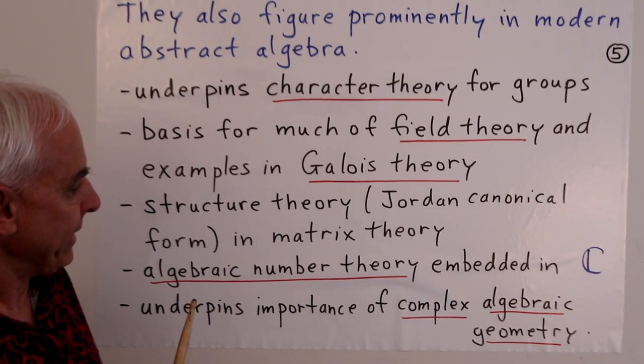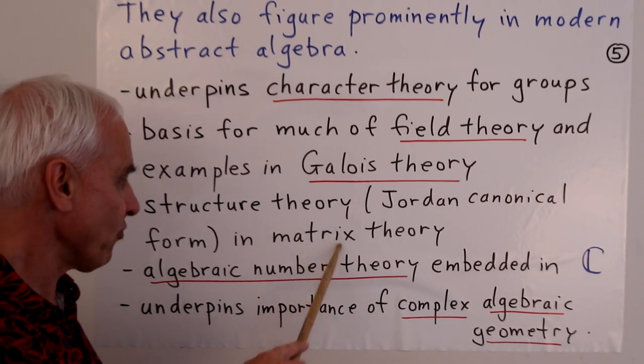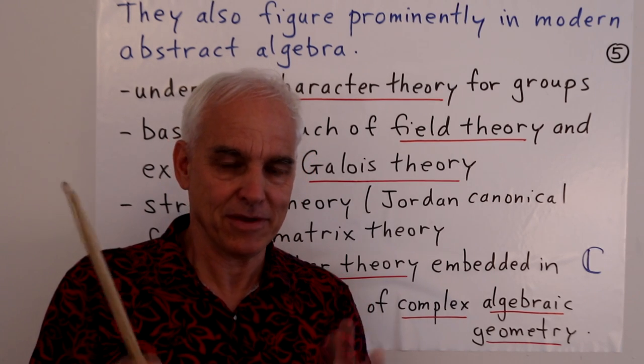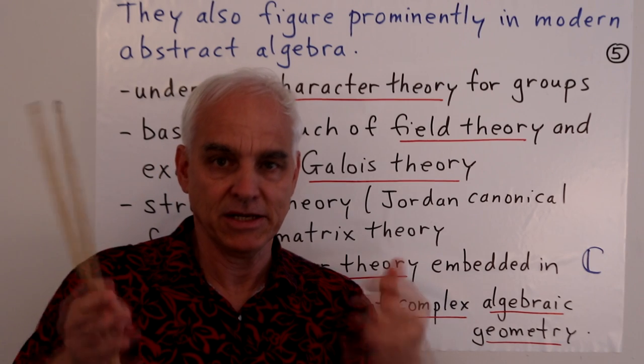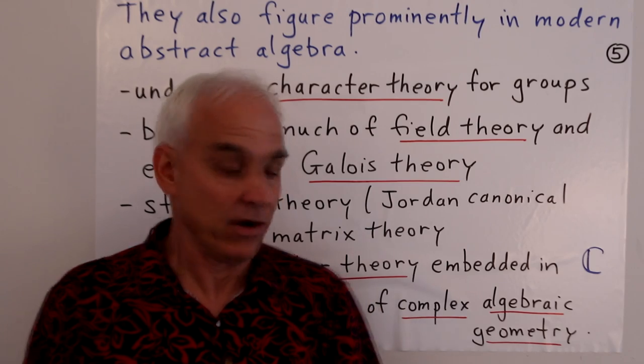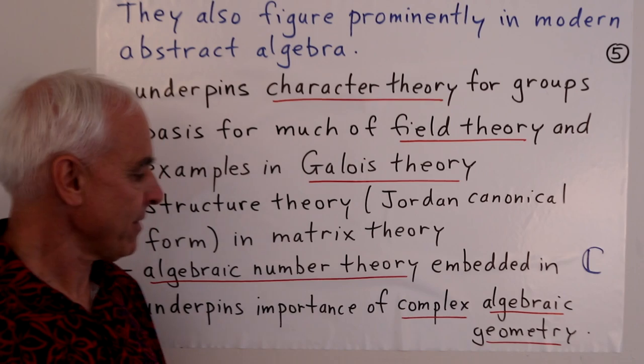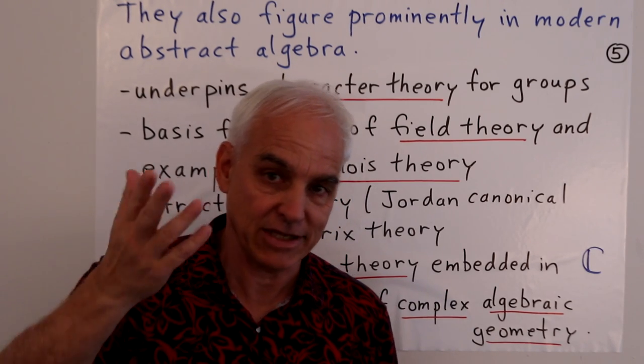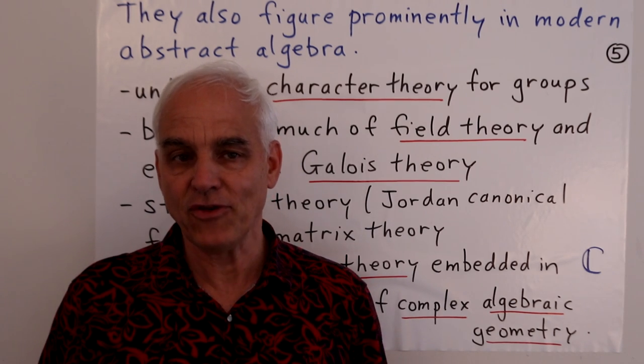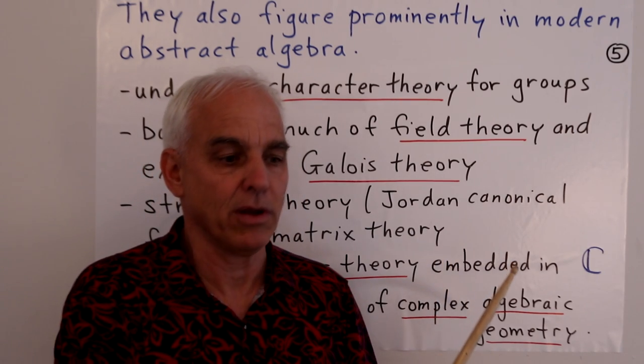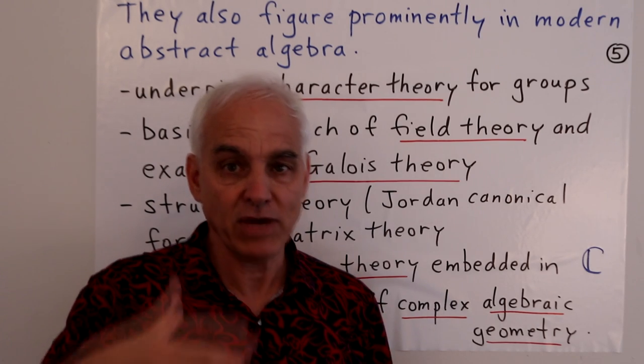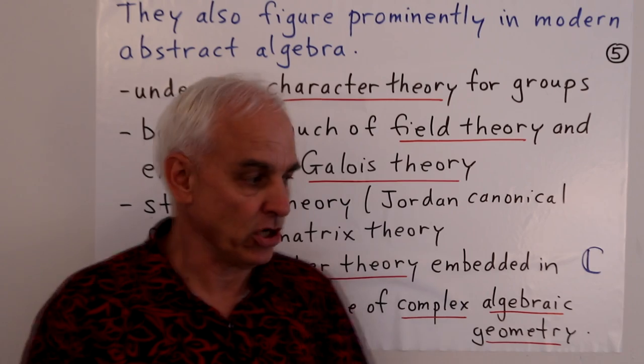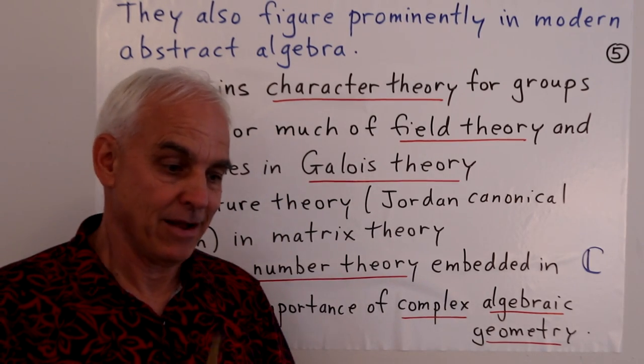Matrices and fundamental theorem of algebra are intimately connected. For example, Jordan canonical form and eigenvalue problems are all associated with this. But it has a role in abstract algebra. Algebraic number theory is very much relying on this kind of thinking of the fundamental theorem, because it tries to embed a lot of the fields and rings that occur in number theory in the complex numbers. And that's essentially playing this game. It also underpins the importance of complex algebraic geometry. In algebraic geometry, we study curves and higher dimensional extensions called varieties. And for various technical reasons, one likes to work over the complex numbers rather than the more natural, intuitive, sort of rational or real numbers.